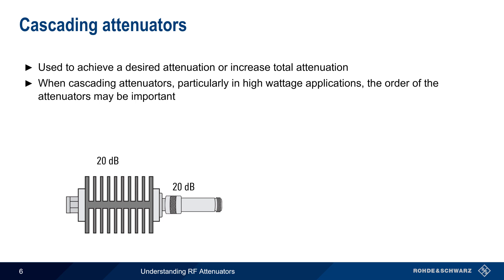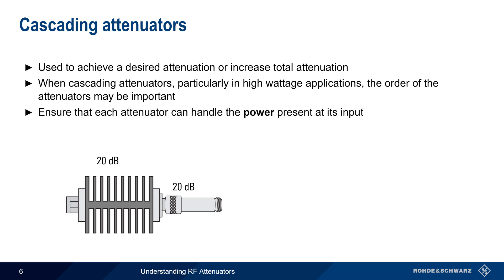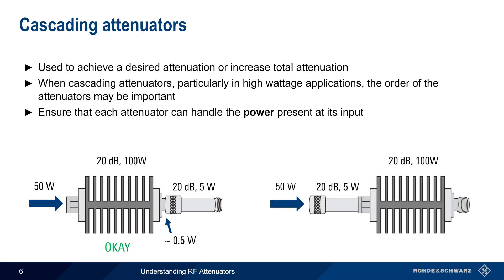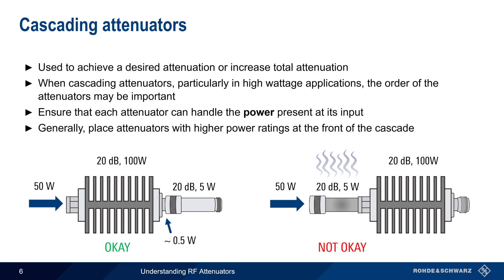However, when cascading attenuators, particularly in high wattage or high power applications, the order of the attenuators may become important. We need to ensure that each attenuator can handle the power present at its input. In this example, the first attenuator has a maximum power of 100 watts and the second has a maximum power of only 5 watts. If the input to the cascade is 50 watts, this will not be an issue because the first attenuator can easily handle this power, and the input to the second attenuator will only be about half a watt, which is well below its maximum. If we were to reverse the order, this would subject the first attenuator to much more power than it is rated for, potentially damaging or destroying it. Generally speaking, the attenuators with higher power ratings should be placed at the front of a cascade.